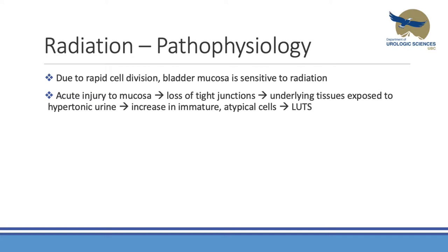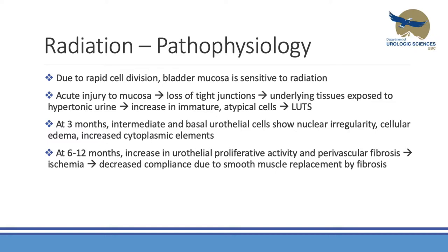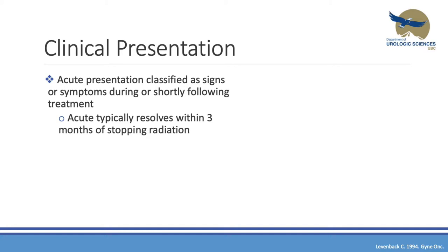Radiation loves to attack actively dividing cells. Acute injury causes loss of tight junctions, exposing underlying tissues to hypertonic urine, resulting in immature atypical cells and lower urinary tract symptoms. At about three months, nuclear irregularity and cellular edema are seen. At six to twelve months there is increased urothelial proliferative activity, increased fibrosis and ischemia, with smooth muscle replaced by fibrosis. Late toxicity causes submucosal fibrosis, inflammation, further ischemia, necrosis, ulceration, and neovascularization — giving rise to superficial fragile vessels responsible for the hemorrhagic cystitis picture.